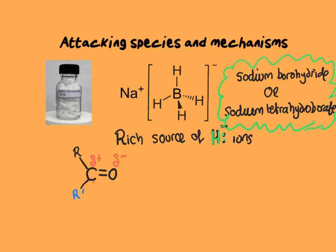Sodium borohydride, or sodium tetrahydroborate, is a powerful, rich source of hydride ions — H minus ions. Hydride ions are nucleophiles and they're attracted to the electron-deficient carbon in the carbonyl compound. They attack by donating a pair of electrons, forming a dative covalent bond. At the same time, the pi bond pair of electrons moves onto the electron-deficient oxygen, resulting in a negative charge.